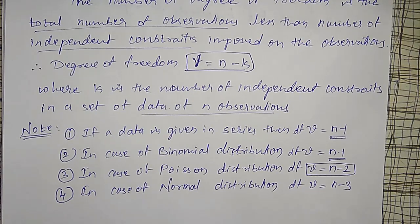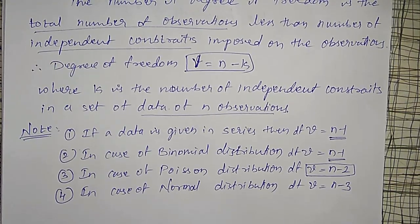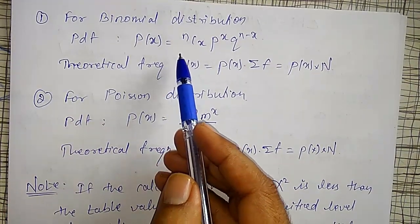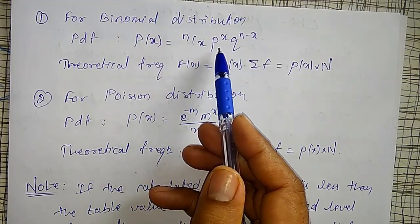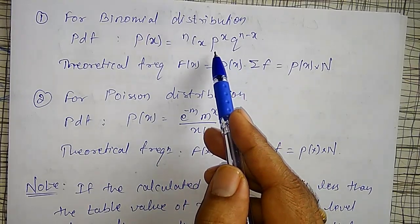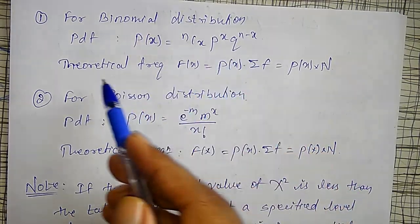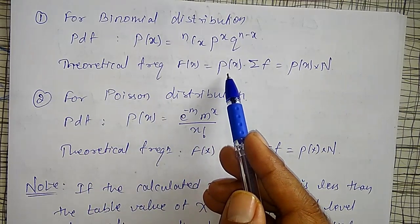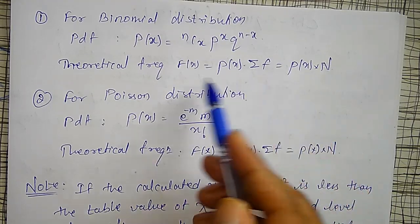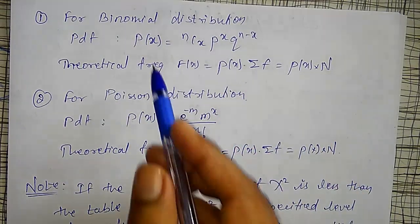For the goodness of fit for binomial and Poisson distributions, a little revision: while fitting the binomial distribution, the PDF is P(x) = nCx * p^x * q^(n-x), where x is the number of successes, p is the probability of success, and q is the probability of failure. The theoretical frequency is given by P(x) multiplied by the total number of observations. For Poisson distribution, the PDF is e^(-m) * m^x / x!, and the theoretical frequency is similarly P(x) times total observations.